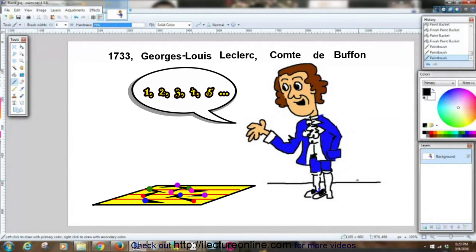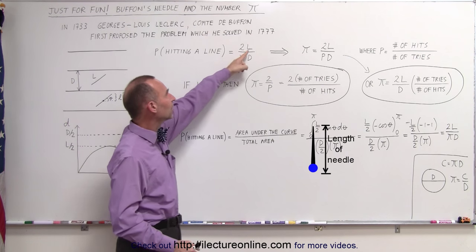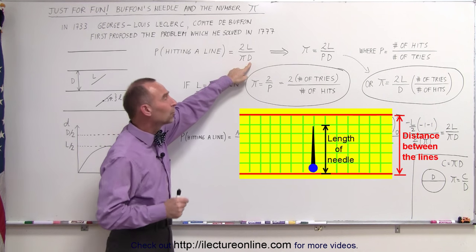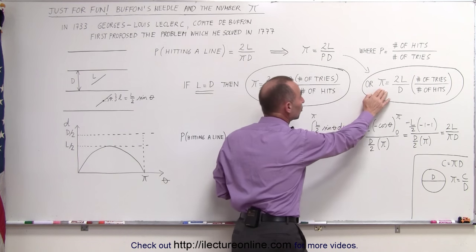So what he said was that the probability of a needle hitting a line was equal to 2 times the length of the needle divided by pi divided by the distance between the lines. And if you solve that for pi, you come up with this equation.